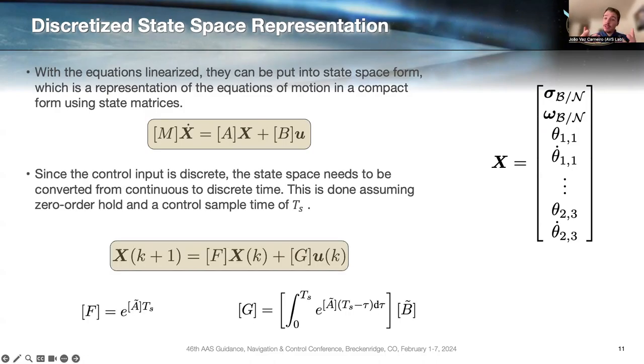We need to discretize the system. This is continuous time. We need to discretize because our control input is discrete. To go from continuous time to discrete time, we're assuming a zero-order hold through a control sample time of ts. The equation now becomes x at k plus one equals f of x of k plus g u of k.